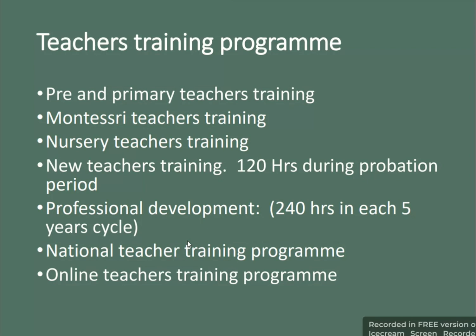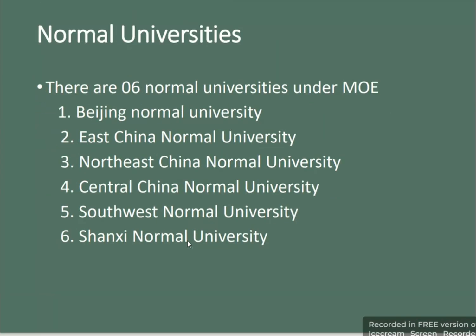Teacher training programs include pre-service and in-service teacher training, Montessori teacher training, nursery teacher training, and new teacher training with a 120-hour probation period. Professional development requires 40 hours in each five-year cycle. There are also national teacher training programs and online teacher training programs. The six Normal Universities under the Ministry of Education are: Beijing Normal University, East China Normal University, Northeast China Normal University, Central China Normal University, Southwest Normal University, and Shaanxi Normal University.